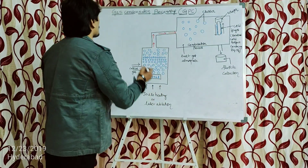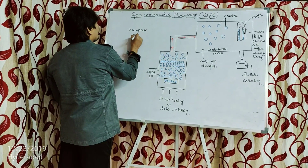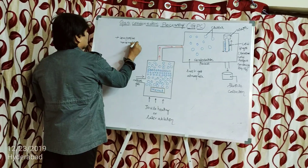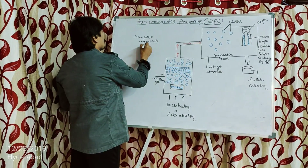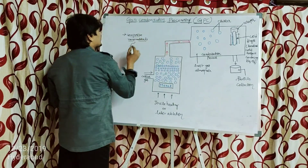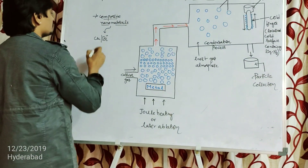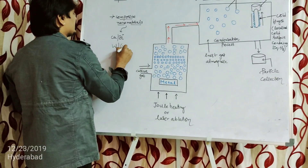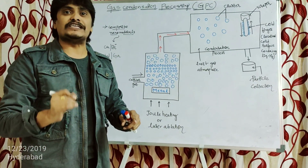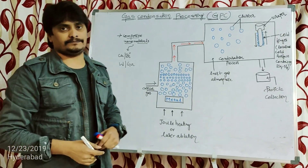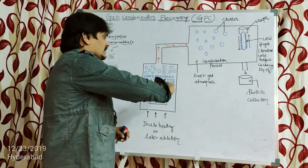Using this method, we can prepare composite nanomaterials. Among the wide variety of nanomaterials, we can prepare composite nanomaterials. Most often, using gas condensation processing, we can prepare copper-bismuth, which is one composite nanomaterial, or tungsten and gallium, which is another composite nanomaterial that can be synthesized using this method.